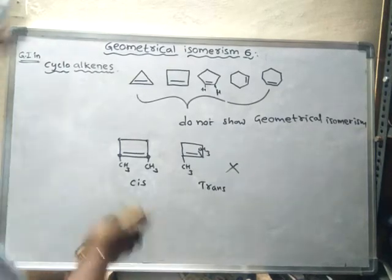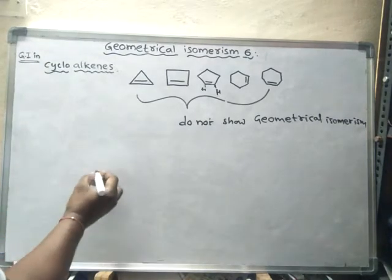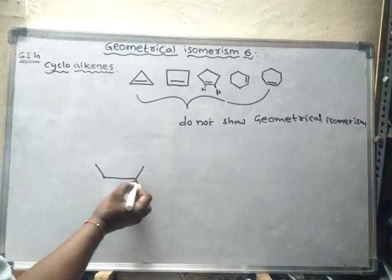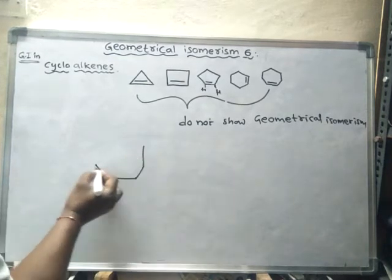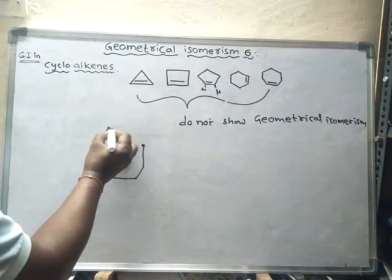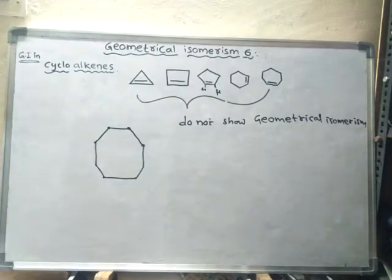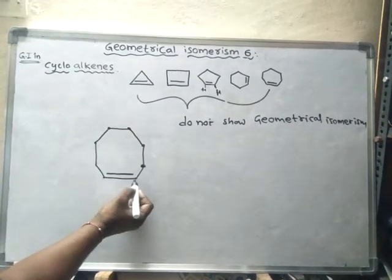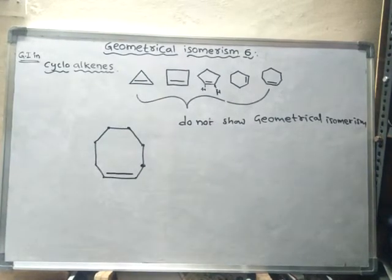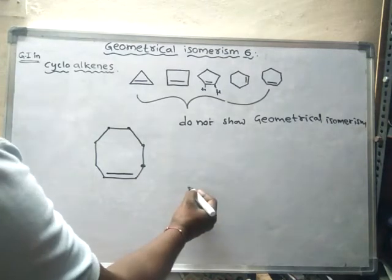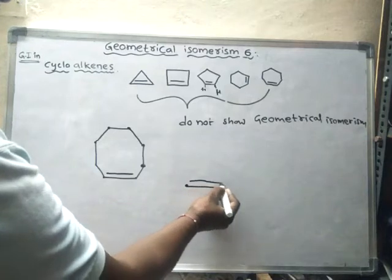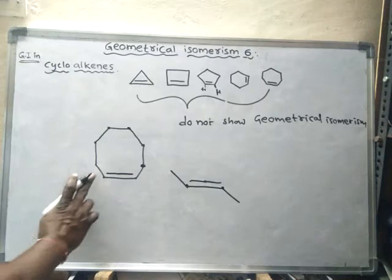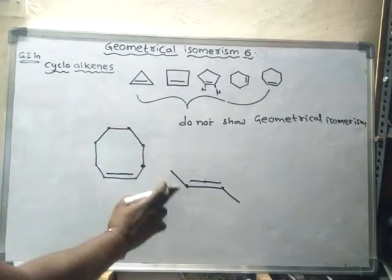What happens if 8 carbons are present? For example, consider a ring with 8 carbons having a double bond. In the cis form, both groups are on the same side. For the trans form, one group is in one direction and the other is in the opposite direction.